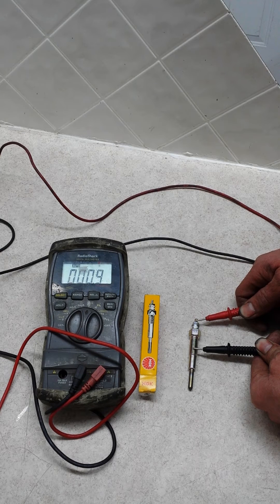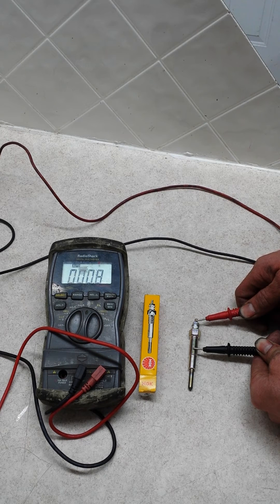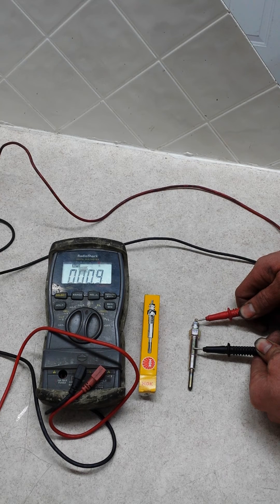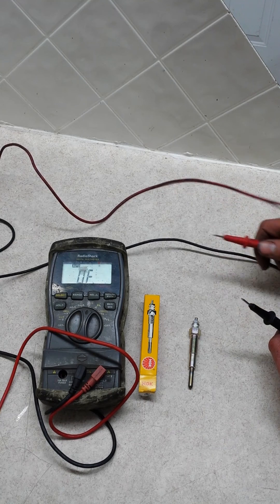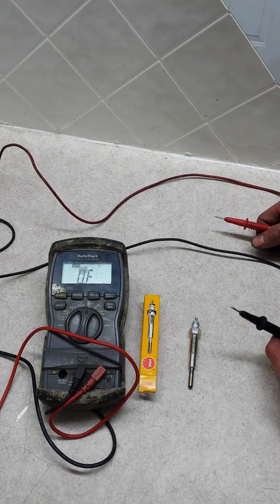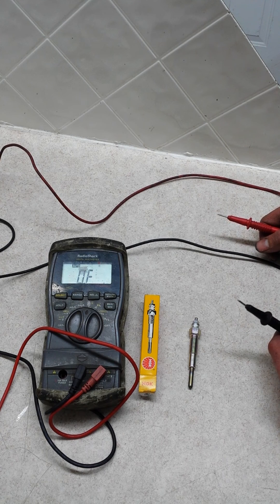This particular glow plug tests at 0.8 to 0.9 ohms. If you have a used glow plug and the reading is much different from that, it's probably time to put a set of glow plugs in.